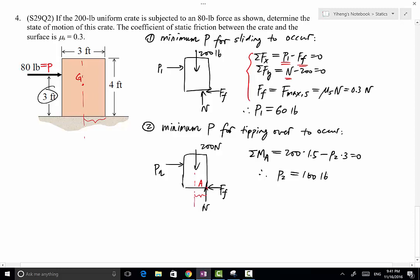So what does that mean? It means that it takes 60 pounds of this applied force at this location to cause sliding, and it takes a 100 pound applied force to cause tipping over. Therefore, because P1 is smaller than P2, 60 pounds is smaller than 100 pounds, it means that it takes less force to cause sliding, therefore sliding is more likely to occur. So sliding will occur before tipping over occurs.